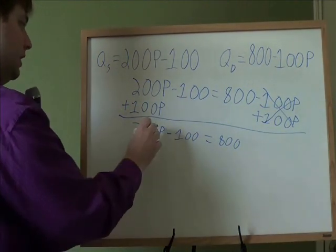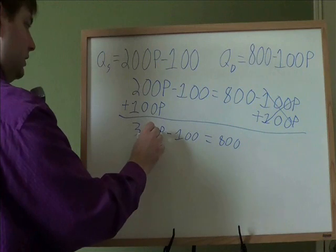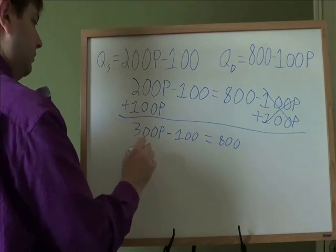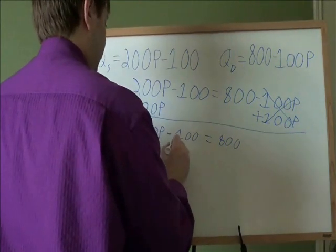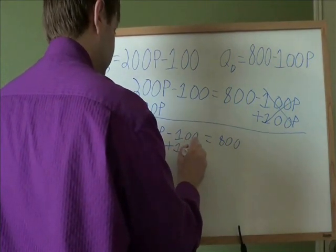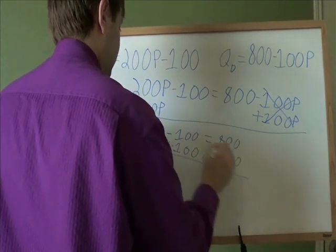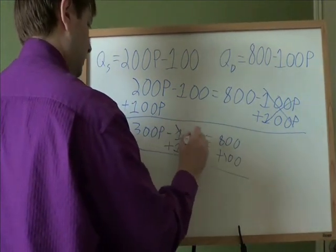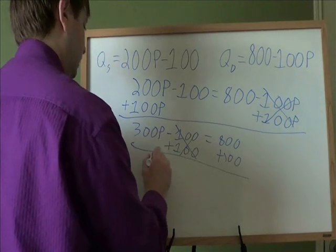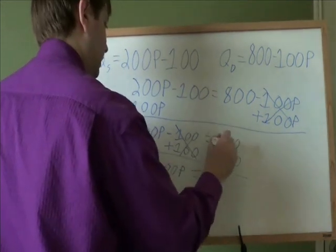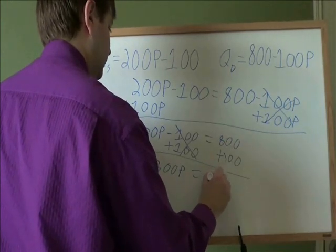Now that we just have one P, we need to get it by itself. So our next step is going to be to get rid of this 100. To get rid of a minus 100, we use its opposite. We use plus 100. So minus 100 and plus 100, opposites that cancel out. 300P comes straight down. 800 plus 100, that gives you 900.